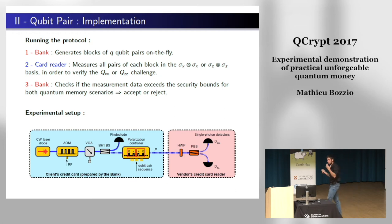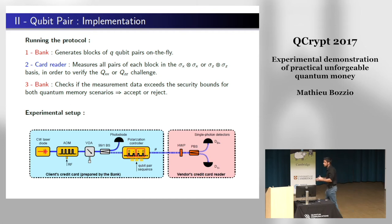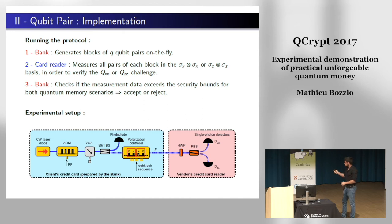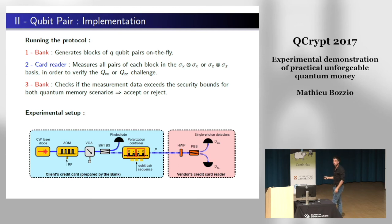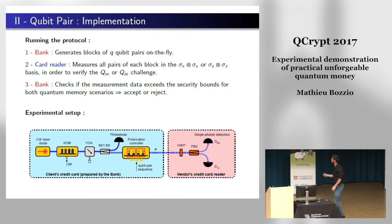The μ we measure is the output of the credit card, because in a future implementation with a quantum memory the relevant attack can only happen when retrieving states from the memory. The vendor's card reader is a simple detection setup: for Qxx, a half-wave plate at 22° measures in σx⊗σx; for Qzz, at 0°. We use InGaAs single-photon avalanche detectors, and post-select when more than one detector clicks.